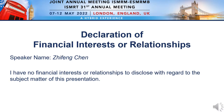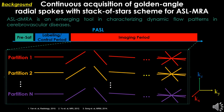I have nothing to disclose. It is well known that ASL-based dynamic MRI is an emergent tool in characterizing dynamic flow patterns, which plays an important role in the diagnosing and treatment of cerebrovascular diseases. In this work, we use a pulsed ASL scheme for ASL-based MRI data acquisition.